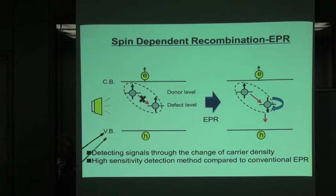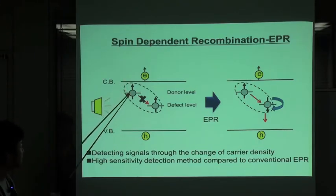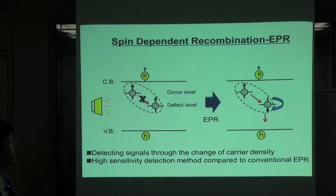Like the left figure, when the sample is illuminated, carrier is produced. Then, the electron is trapped by the donor level and defect level. At the steady state, the direction of the electron spin at donor level and defect level is parallel.